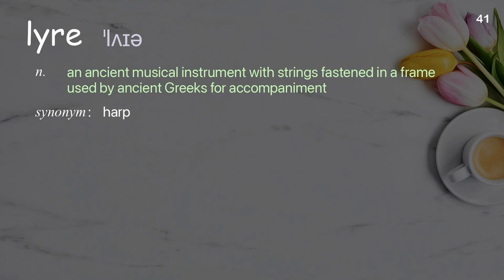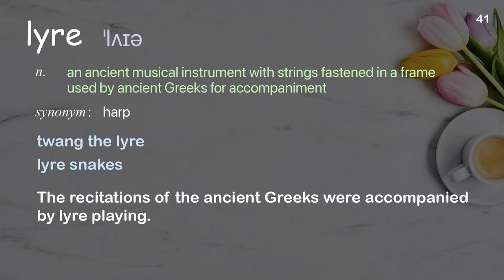Lyre: an ancient musical instrument with strings fastened in a frame, used by ancient Greeks for accompaniment. Examples: twang the lyre, lyre snakes. The recitations of the ancient Greeks were accompanied by lyre playing.